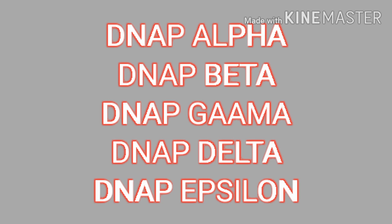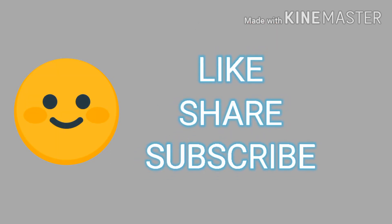Then DNA polymerase delta — it is the major synthesis enzyme in eukaryotes and it synthesizes both the lagging strand and leading strand. Then DNA polymerase epsilon — it functions in nucleotide excision repair and base excision repair. Then topoisomerase enzymes — their main function is to prevent supercoiling.